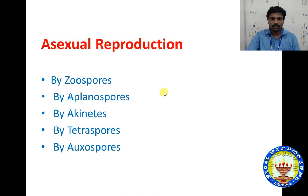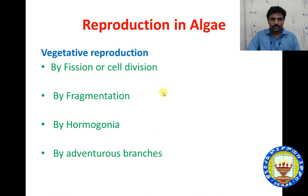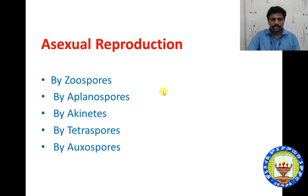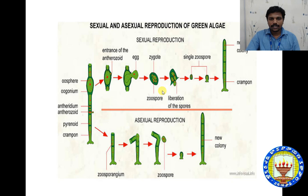Reproduction in algae represents three types: vegetative reproduction, asexual reproduction, and sexual reproduction. Vegetative reproduction occurs with the help of fission or cell division, by fragmentation, by hormogonia, or by adventitious branches. Asexual reproduction in algae occurs with the help of zoospores, aplanospores, akinetes, tetraspores, and auxospores.